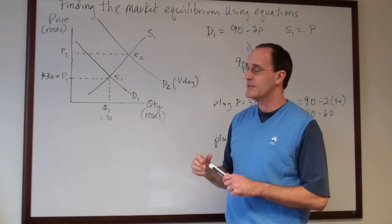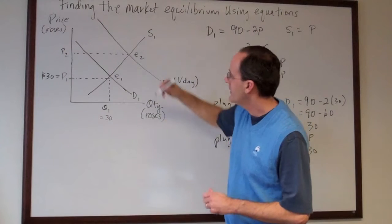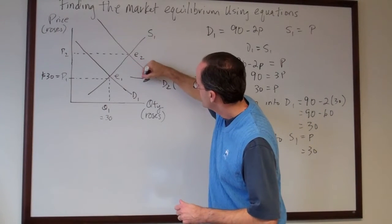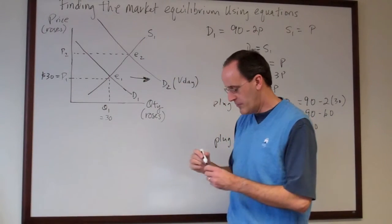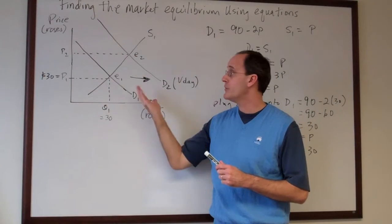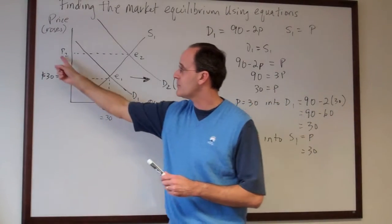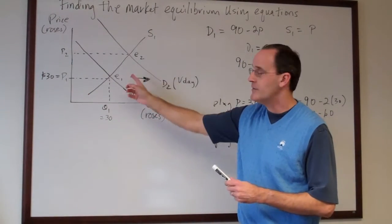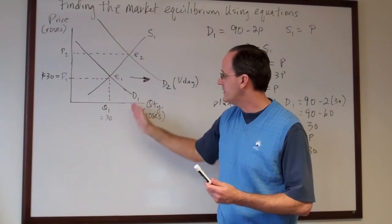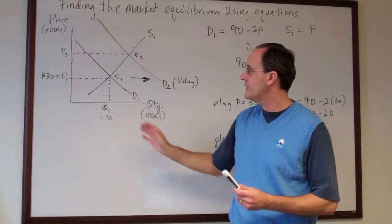Our graphic tells us and of course our intuition tells us as well that if there's a change in demand and people want to buy a whole bunch more roses the price has to rise. And at the same time since a whole bunch of people want to buy these the number that will get sold in the marketplace should also rise.